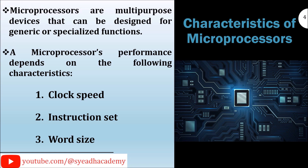Characteristics of microprocessors. Microprocessors are multi-purpose devices that can be designed for generic or specialized functions. A microprocessor's performance depends on the following characteristics: 1. Clock speed, 2. Instruction set, 3. Word size.